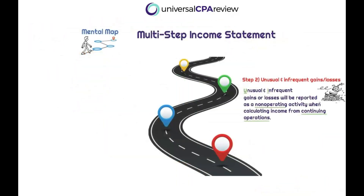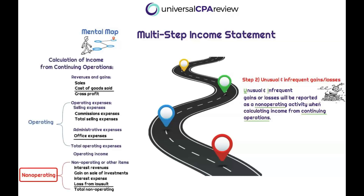The next step in our mental map involves something relatively new to FASB literature: extraordinary items are no longer going to be included as a separate line. They're simply lumped into the non-operating section of the income statement. A common exam question may ask about transactions that are infrequent in occurrence or unusual in nature. Those items are still presented — just as a component of income from continuing operations.